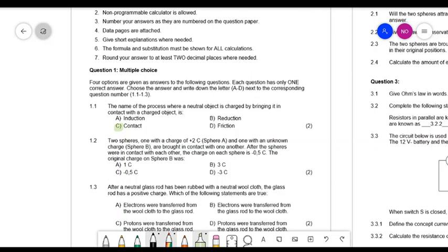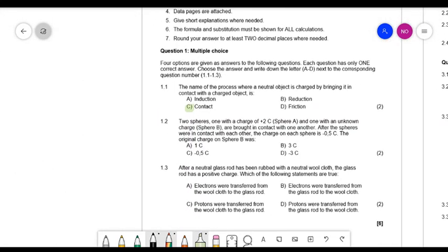For 1.2 they say two spheres, one with a charge of positive 2 coulomb and one with an unknown charge, are brought in contact with one another. After the spheres are brought together and withdrawn from each other, the charge on each one is negative 0.5, and then I ask for the original charge on sphere B.